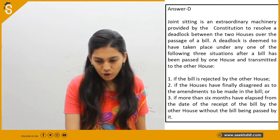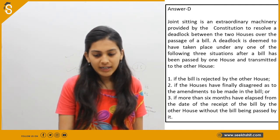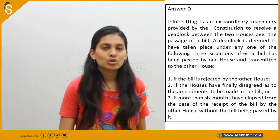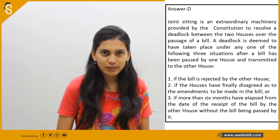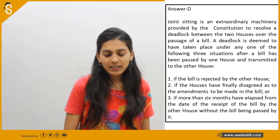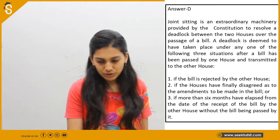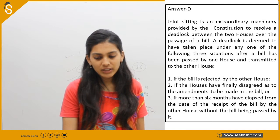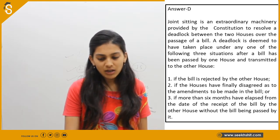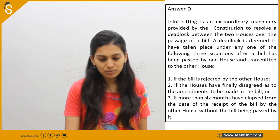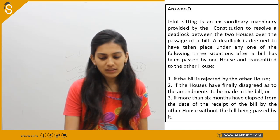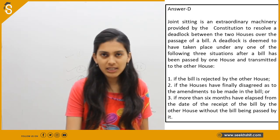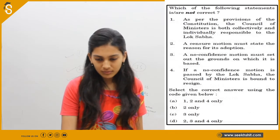Joint sitting is an extraordinary machinery provided by the Constitution to resolve a deadlock between the two houses over the passage of a bill. A deadlock is deemed to have taken place under any of the following three situations after a bill has been passed by one house and transmitted to the other: first, if the bill is rejected by the other house; second, if the houses have finally disagreed as to the amendments to be made; or third, if more than six months have elapsed without the bill being passed. The President does not figure in any of these conditions.